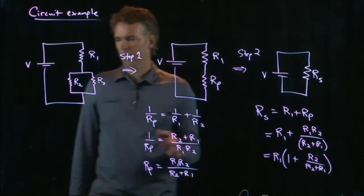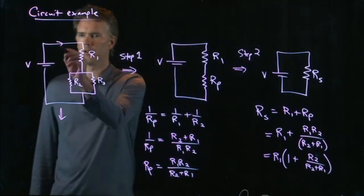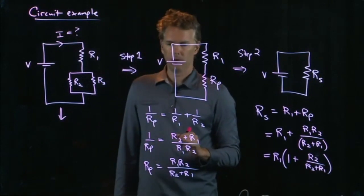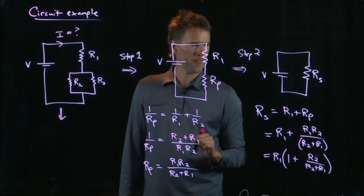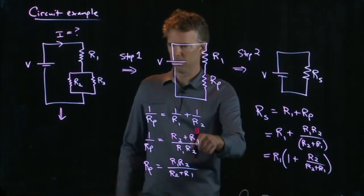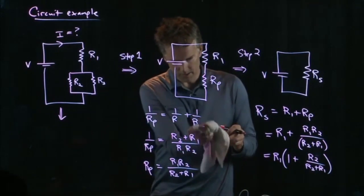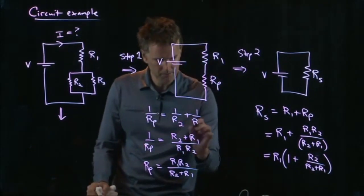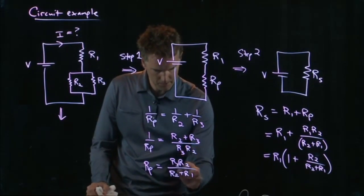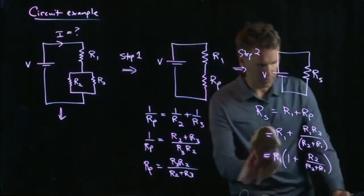So one of the questions now is, what's the current going through this circuit? What is this current I? Oh yeah, you're totally right. Thank you. These were R2 and R3. So change all the R1s in there to R3s. And now let's be a little bit more careful over here.